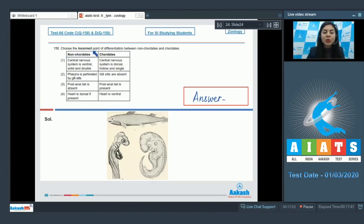Question 158: Choose the incorrect point of differentiation between non-chordates and chordates. We have to find the incorrect point. Let's read them one by one. Non-chordates and chordates. The left side should list features of non-chordates and the right side features of chordates. Point 1: Central nervous system is ventral, solid and double. This is correct. The nervous system is ventral in non-chordates, whereas it is dorsal, hollow and single in chordates. So this is the right point.